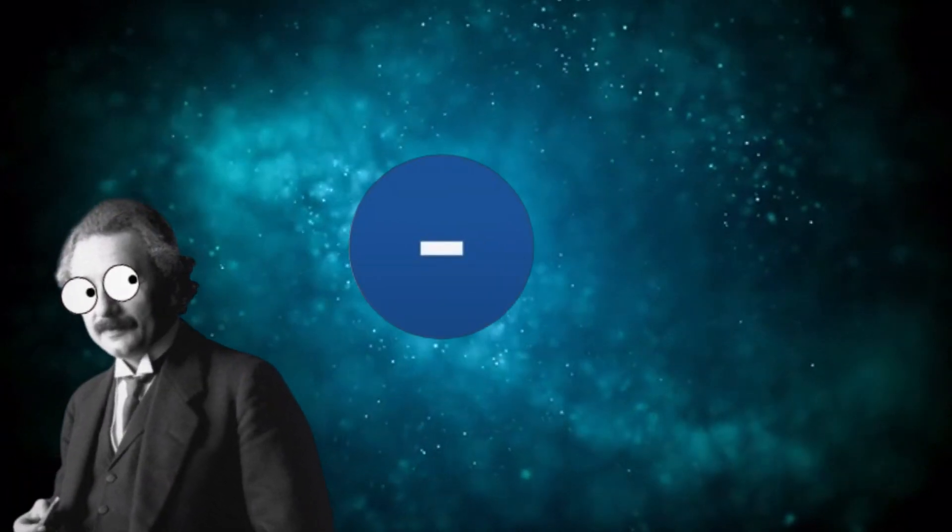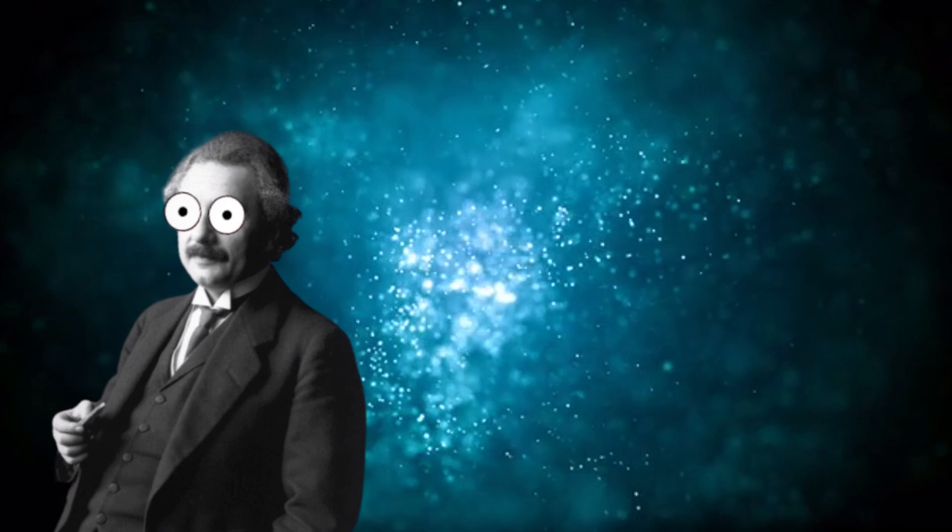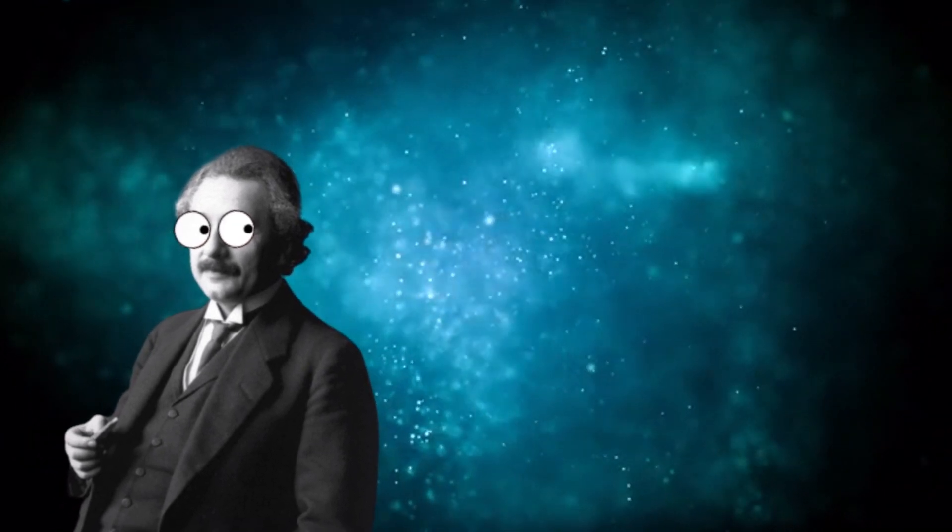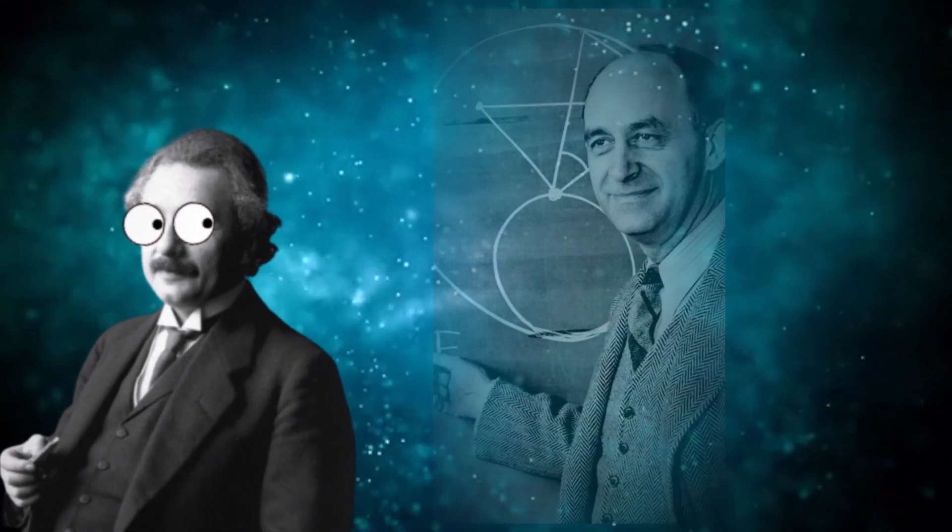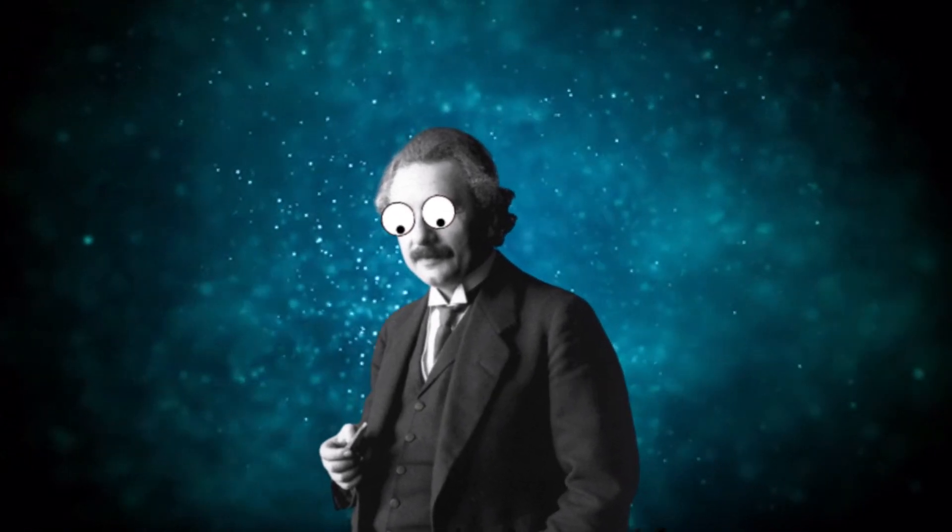So what are fermions? Fermions are a class of elementary particles that include electrons. They obey the statistical laws formulated by the Italian physicist Enrico Fermi. The most important feature of fermions is that they follow the Pauli exclusion principles.